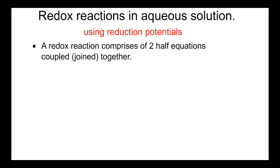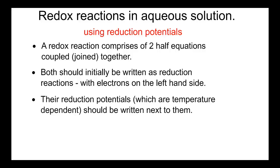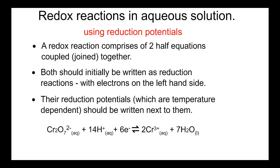A redox reaction comprises two so-called half-equations, which you join or couple together. Both half-equations should initially be written as reduction reactions — that's to say with electrons on the left-hand side. Before coupling two half-equations, we need to determine which has the larger reduction potential. Their reduction potentials, which are temperature dependent, should be written next to them. As we go through the video, I'll write the E-theta values, or reduction potentials, to the right.